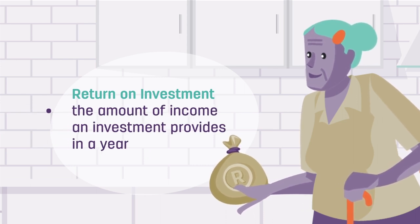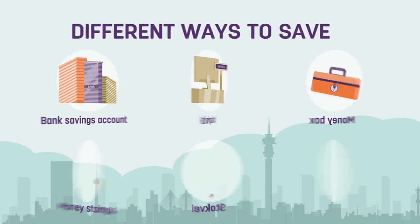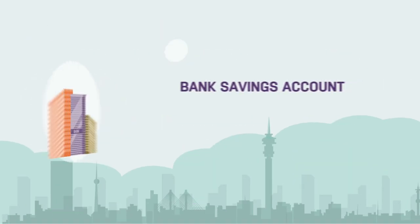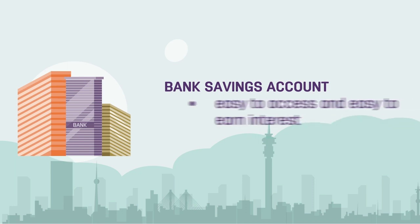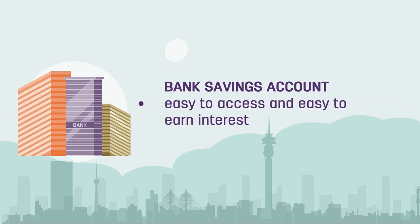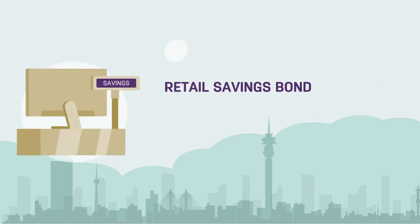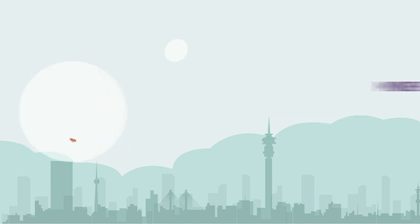So what exactly are the different ways to save? The most common way is a savings account with your bank, which is an easy way to earn interest and access your money. There's also a retail savings bond — an investment that allows you to earn interest over a set time period.